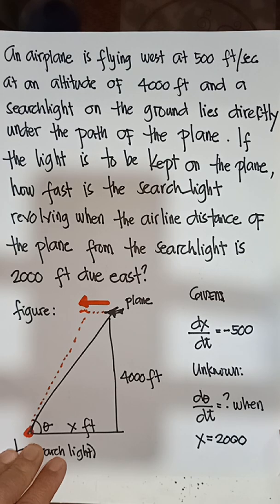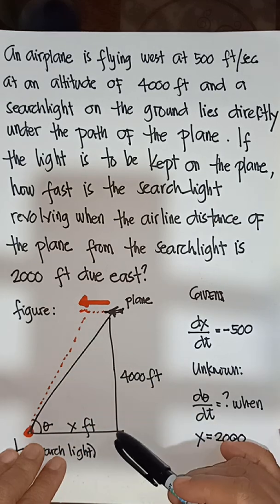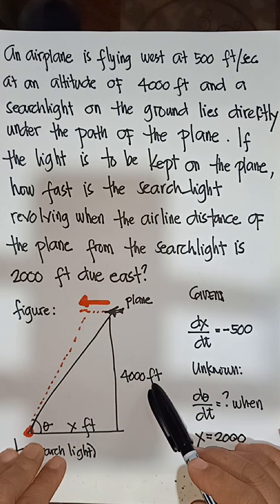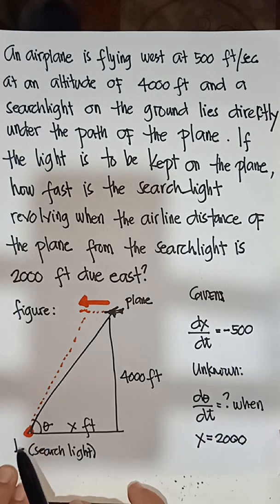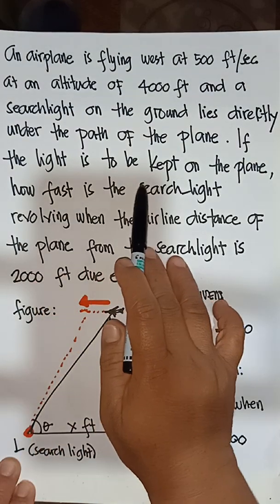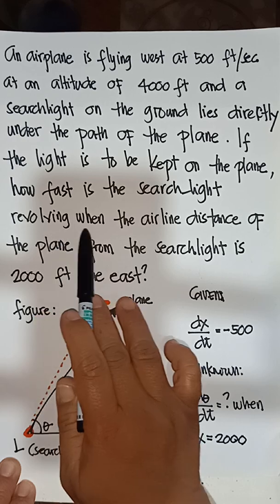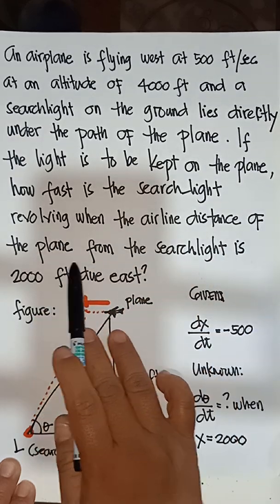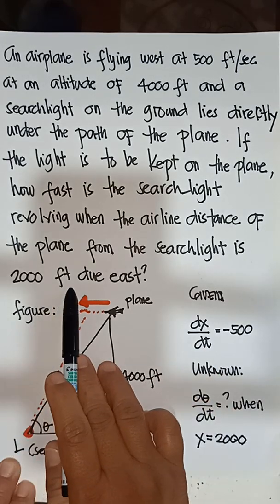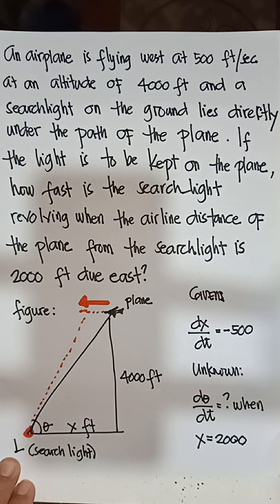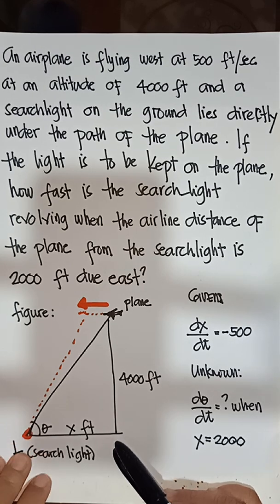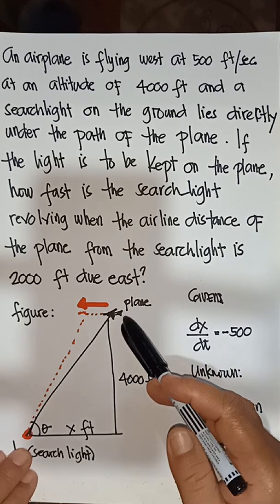Our next example: an airplane is flying west at 500 feet per second at an altitude of 4,000 feet. A searchlight on the ground lies directly under the path of the plane. If the light is to be kept on the plane, how fast is the searchlight revolving when the airline distance of the plane from the searchlight is 2,000 feet to the east?